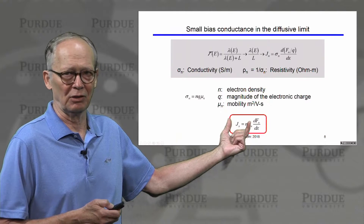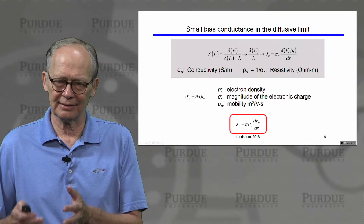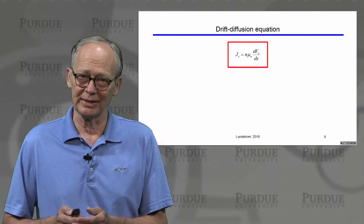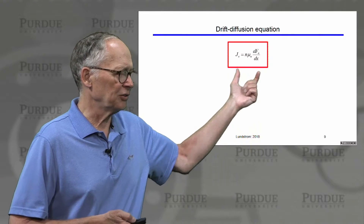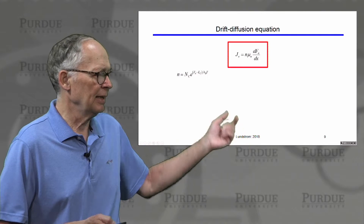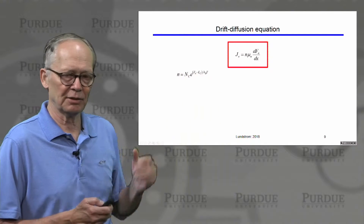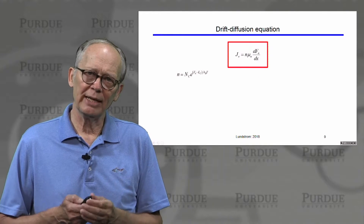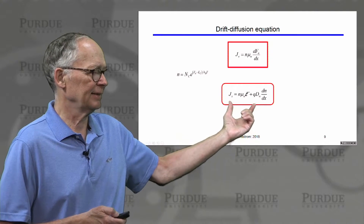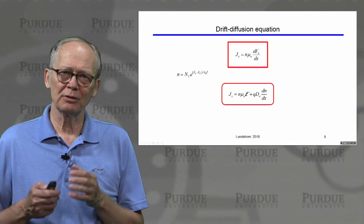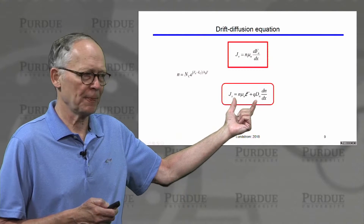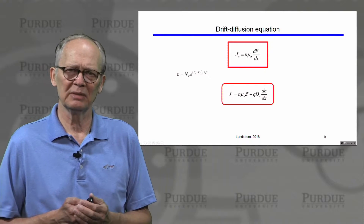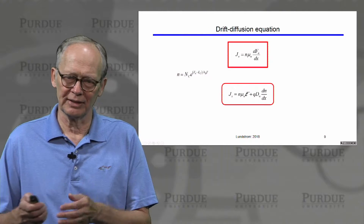This current equation, where J equals electron density times mobility times gradient of the quasi-Fermi level, is a very solid starting point for traditional semiconductor devices in the diffusive limit. It has been around for a long time in transport theory, and we have derived it consistently with the Landauer picture, allowing us to go smoothly from small devices to large devices.